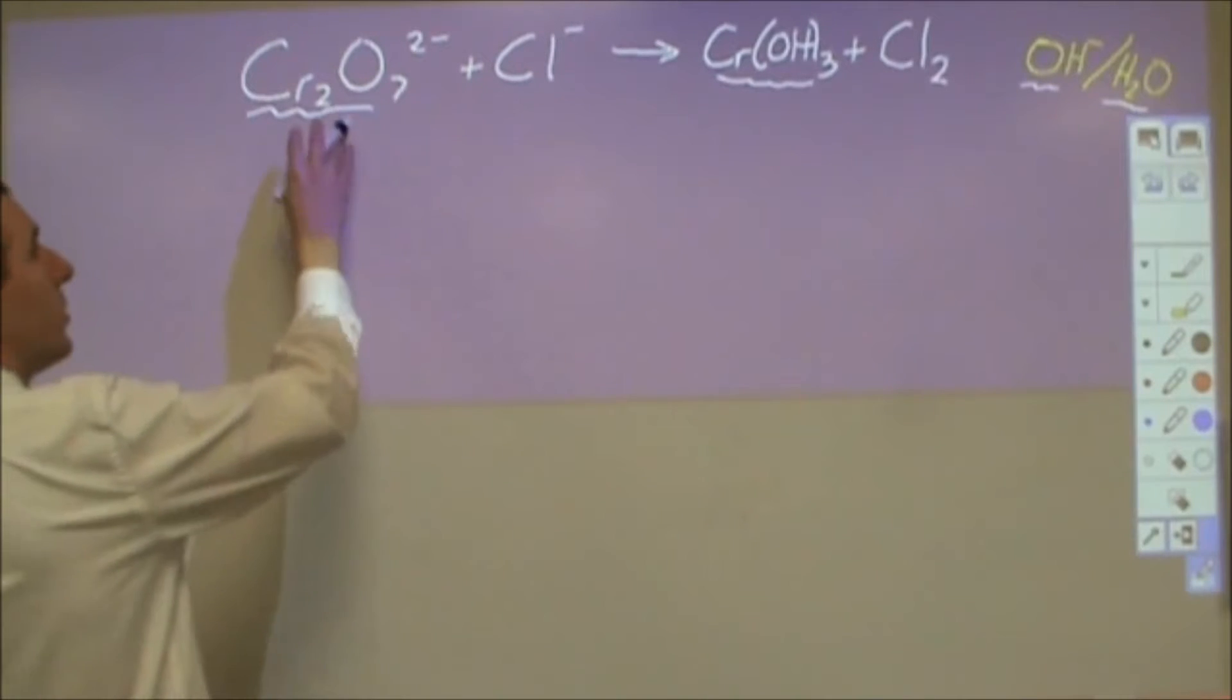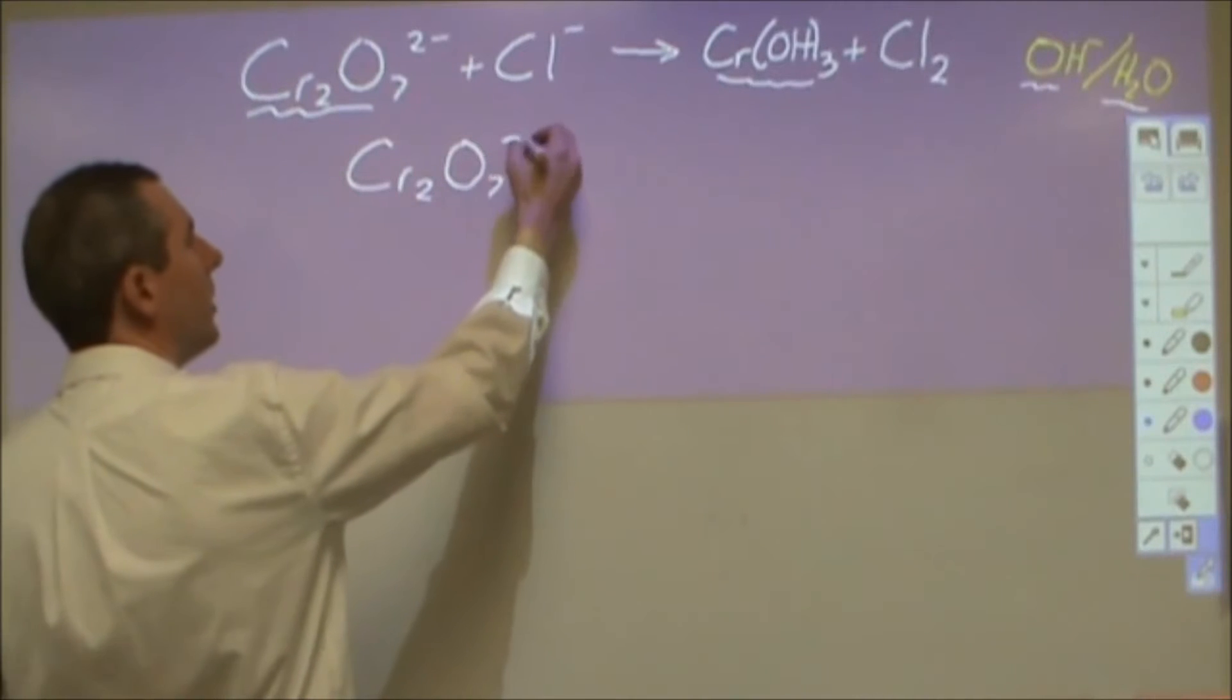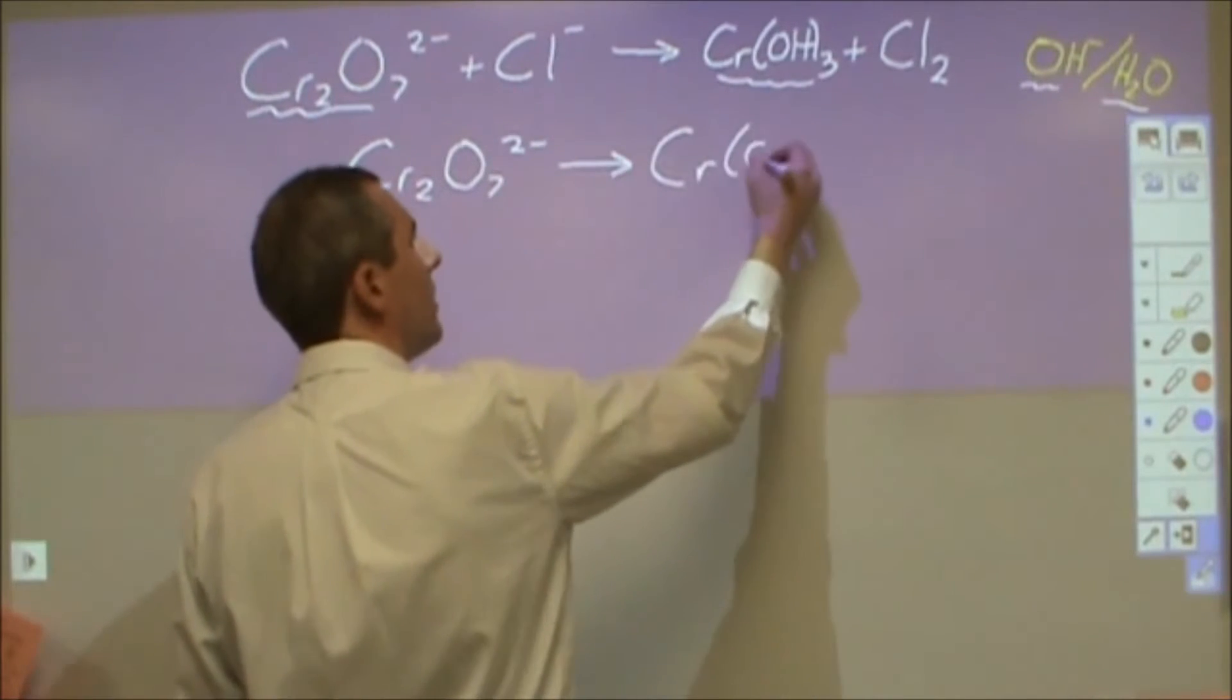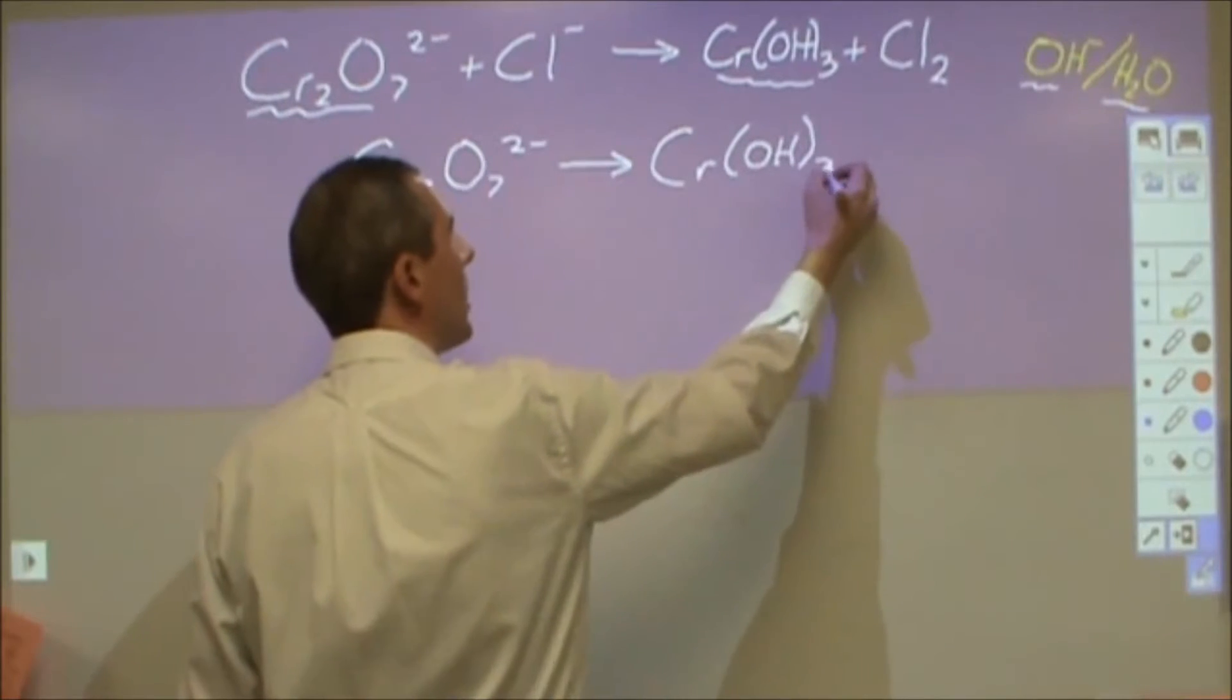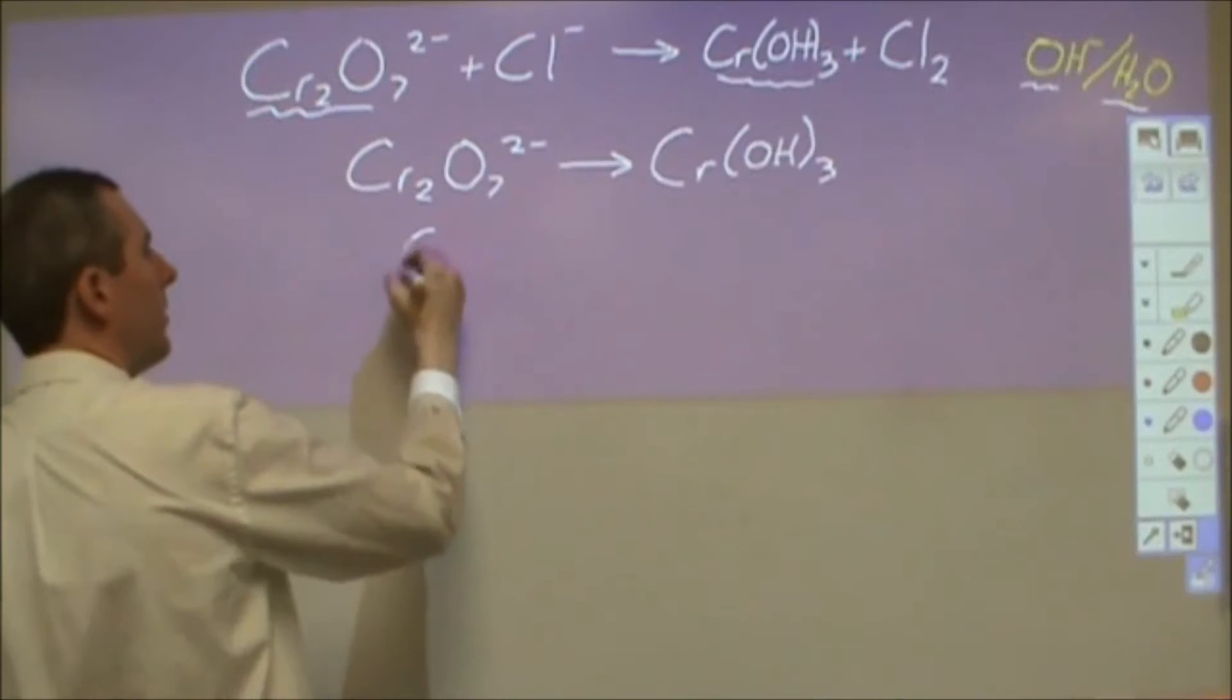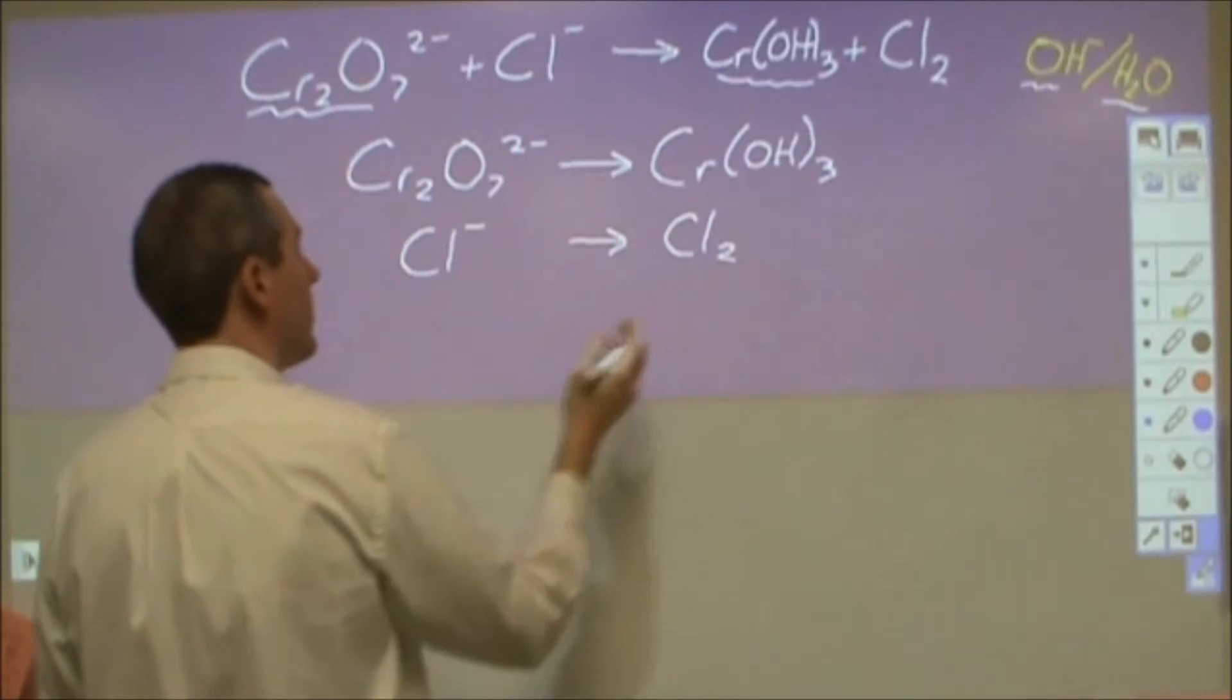So what you want to do first is you want to take the two things that are similar and separate them from the other two things that are similar into what are called half reactions. We're going to balance these by themselves. This is going to help us balance the charge systematically. So it looks like a lot of work, but it really starts to get redundant after a little bit and it helps to systematize this.